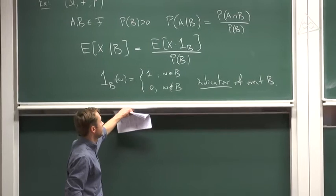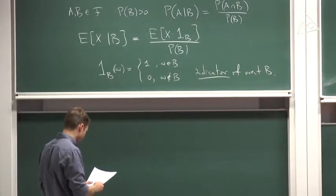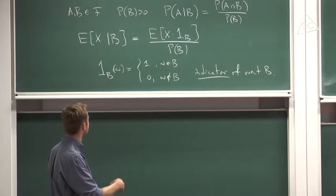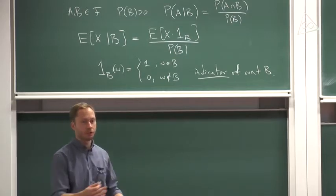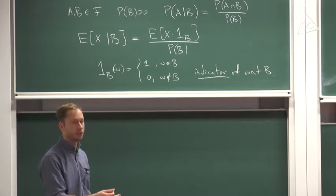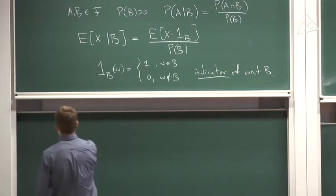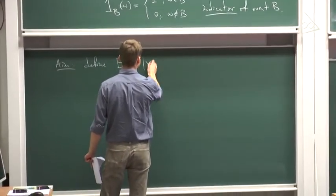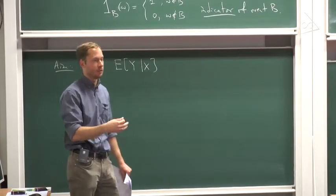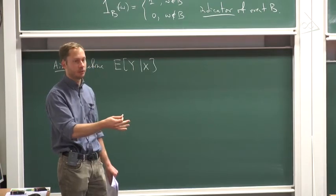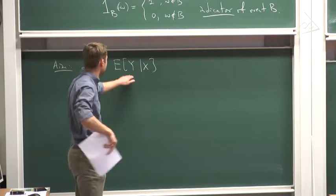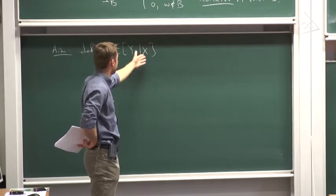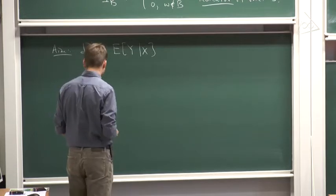That's how you define the conditional expectation with respect to some event. But we want to do more: we want to understand conditional expectation of a variable with respect to more general information — for instance, with respect to the value of another random variable. Our aim is to define the conditional expectation of Y with respect to some variable X: to make sense of what it means if we condition on the value of random variable X, what would be the value of random variable Y, and more generally, conditioning on several random variables and on arbitrary collections of events.